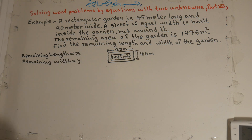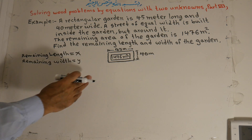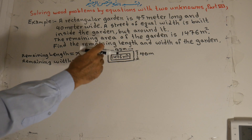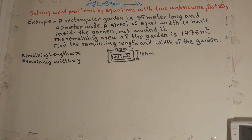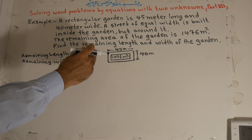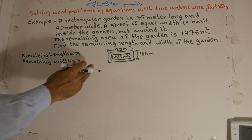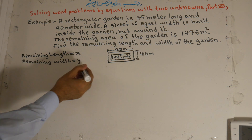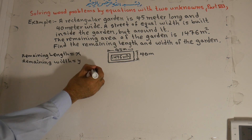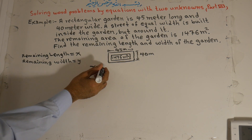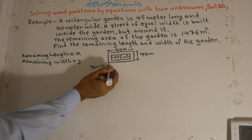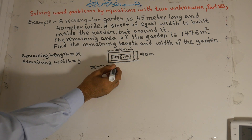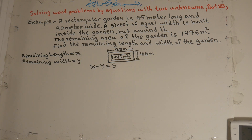Because the street around the garden is of equal width on all sides, the difference between the original length and width is 45 minus 40, which equals 5 meters. The remaining length and width differ by the same amount, so x minus y is equal to 5 meters.